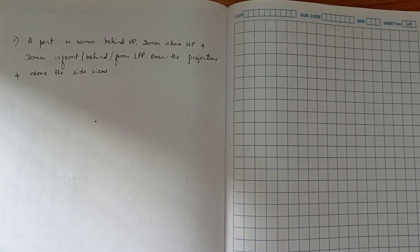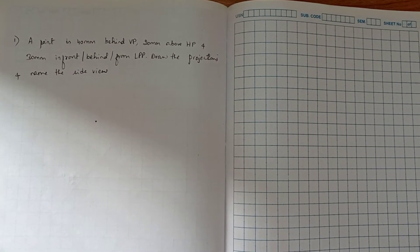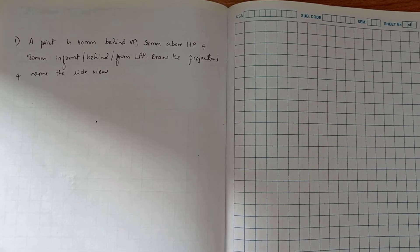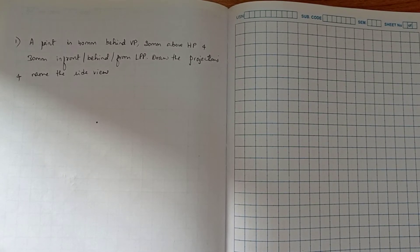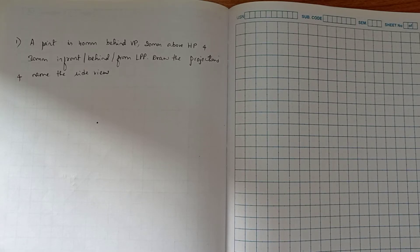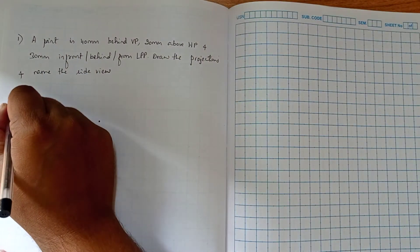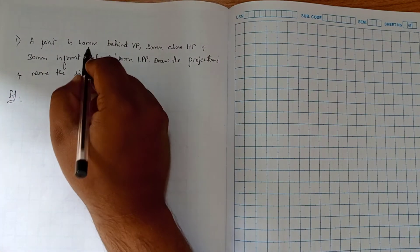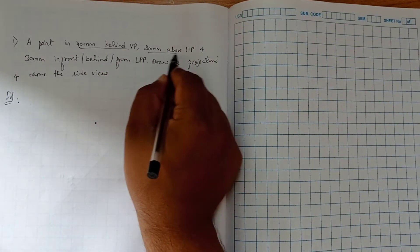Okay, today we are going to discuss another problem on LPP, a side view problem. The first problem we did was with the right profile plane, so now we are going to do the problem with respect to the left profile plane. We know the procedure: first identify which quadrant the point is lying in.